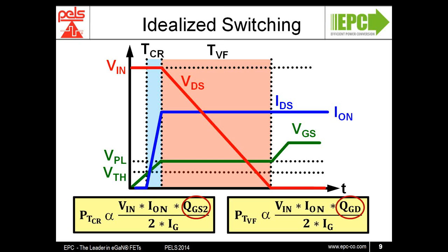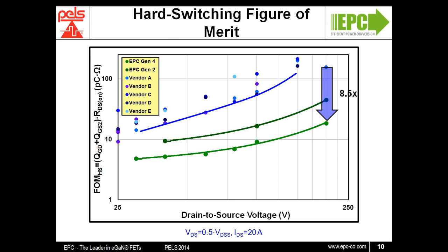Comparing the switching performance at different voltages between eGaN-FETs and traditional switching MOSFETs, the best MOSFETs from different vendors are plotted against the second-generation eGaN-FETs as well as the latest fourth-generation low RDS-on eGaN-FETs. From this, we can see that the eGaN-FETs offer more than eight times improvement in hard switching figure of merit at 200 volts, about six times improvement at 100 volts, and still a respectable three and a half times improvement down at 30 volts compared to silicon devices.